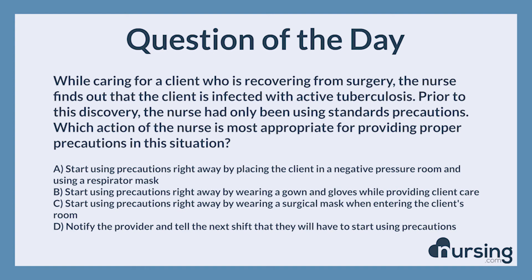The correct answer is A: Start using precautions right away by placing the client in a negative pressure room and using a respirator mask. Isolation precautions are used for different types of infectious conditions to prevent the transmission of illness. A client with active TB requires airborne precautions, which includes isolation in a negative pressure room and the use of a specialized filter mask when providing care. Airborne precautions should be implemented right away, even if the nurse was unaware of the condition before.